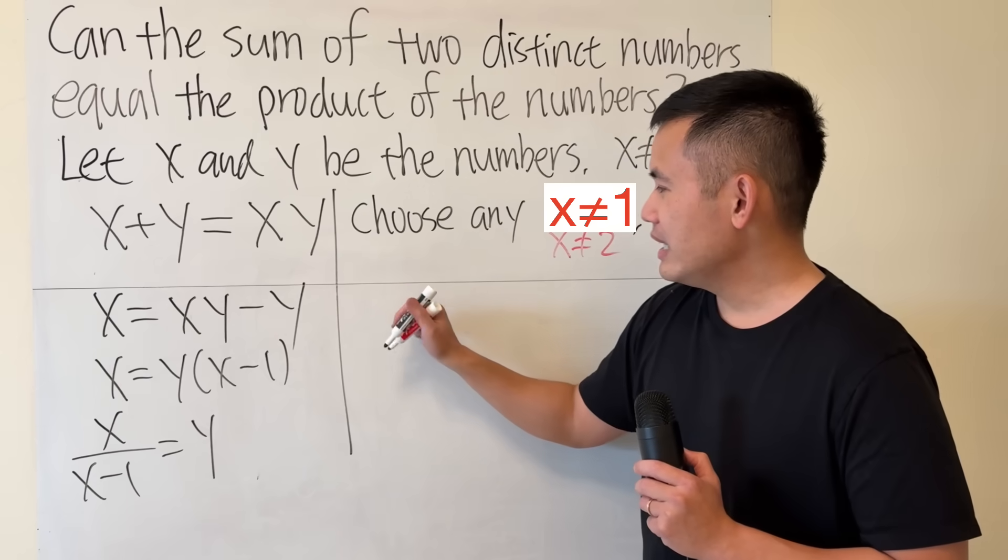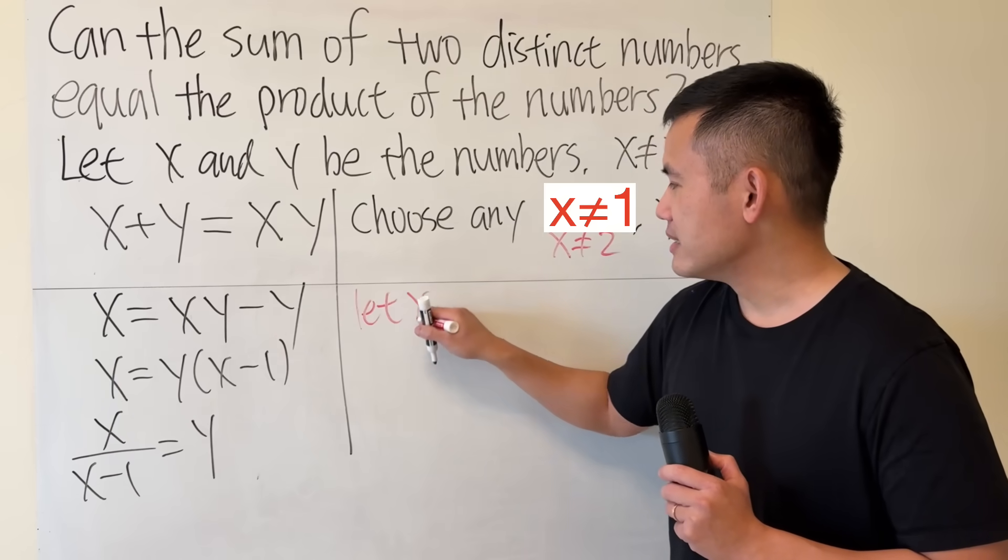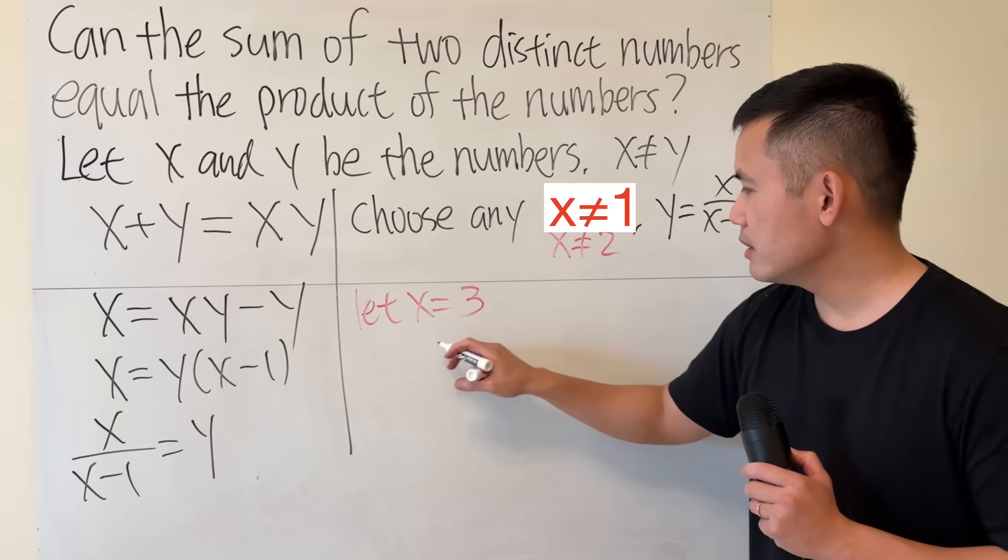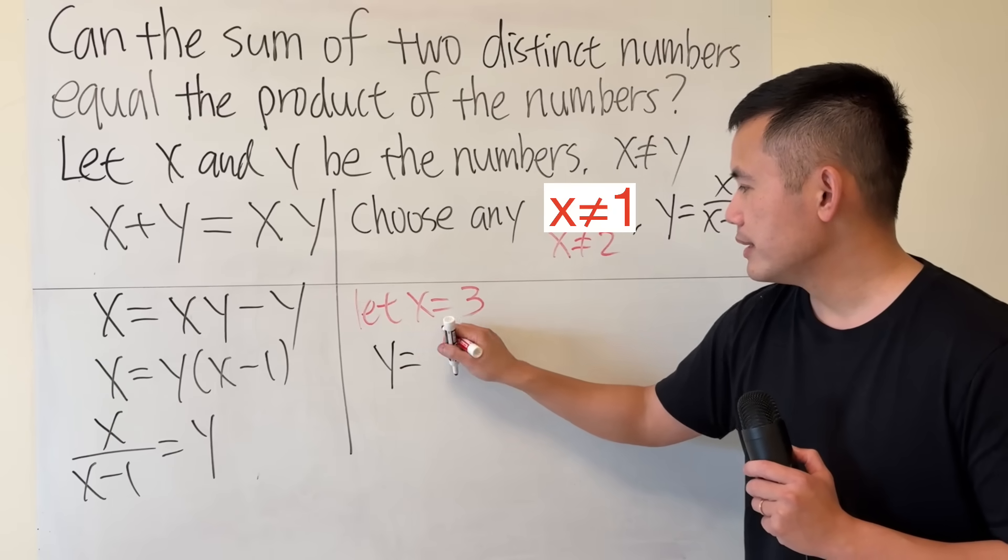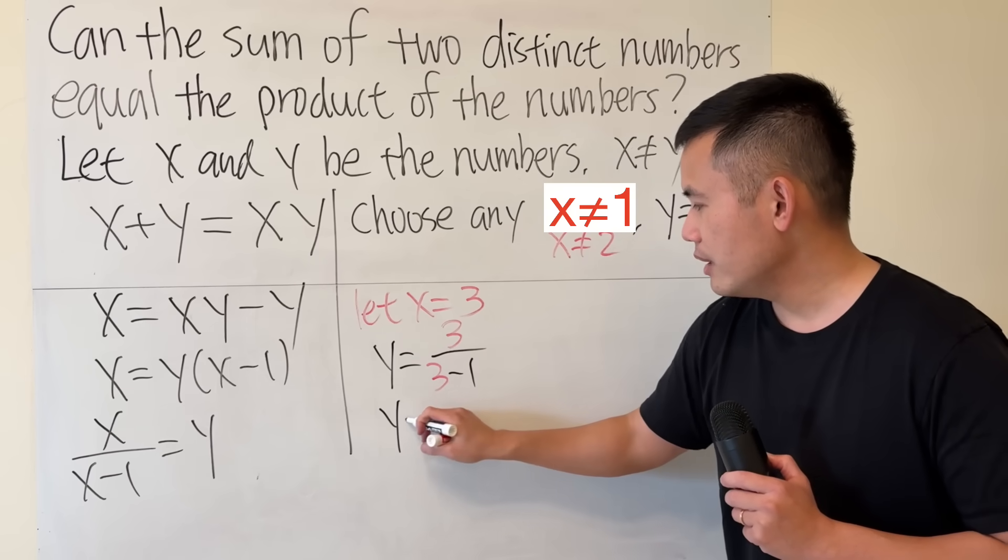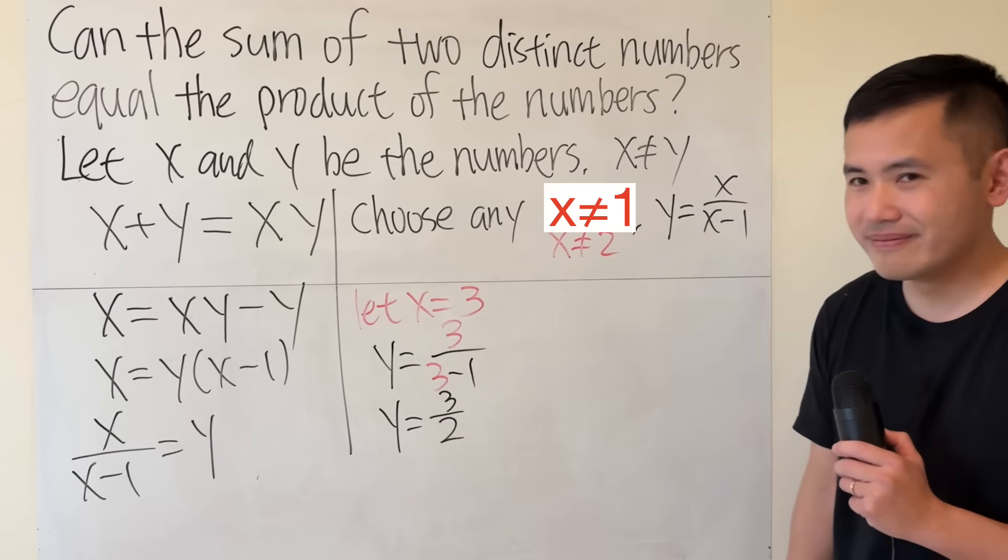Let's say I have x equals 3. And now, let's work this out. Then y is going to be y equals 3 over (3 minus 1). And that's just 3 over 2.